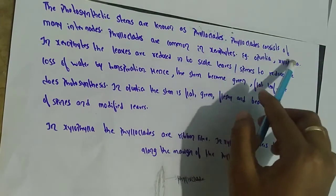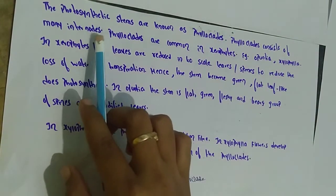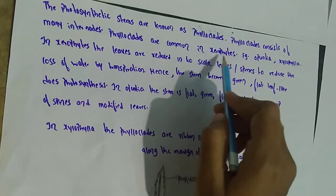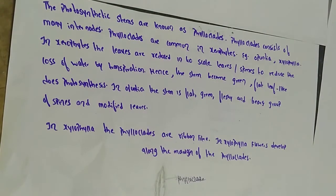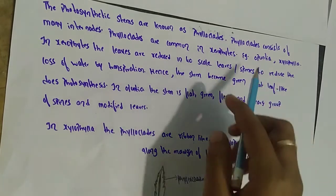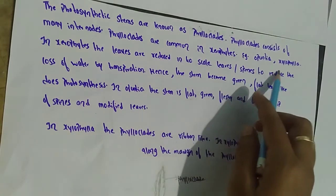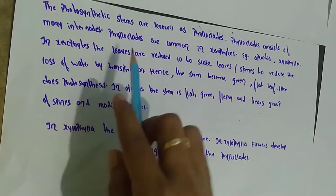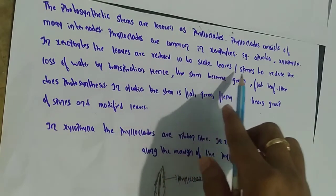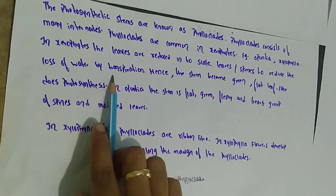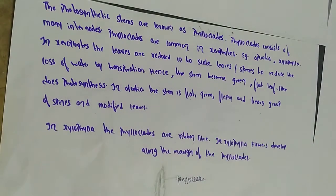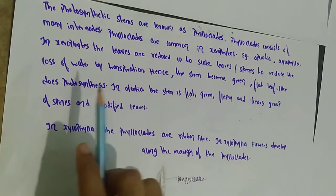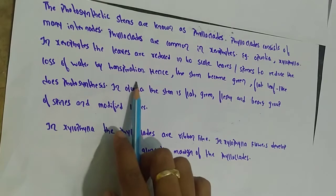Phylloclades consist of many internodes and are commonly found in xerophytes. Xerophytic plants are a special type adapted to survive in environments with little water. In xerophytes, the leaves are reduced into scale leaves or spines to reduce the loss of water by transpiration.